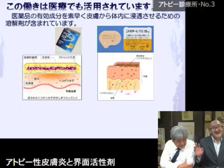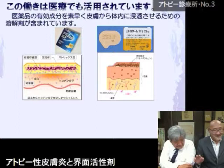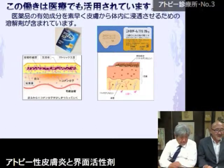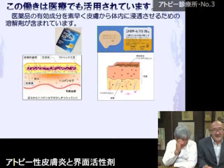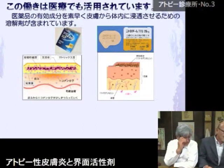界面活性剤は皮膚表面だけでなく、角質細胞の間にある皮脂成分にも食い込んで取り除いていきます。カサカサの状態になるわけです。この働きは医療でも活用されていて、